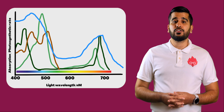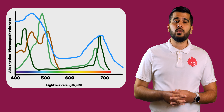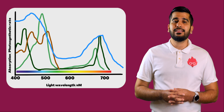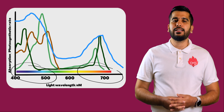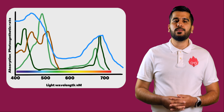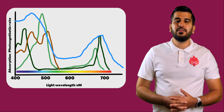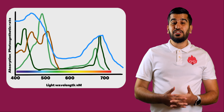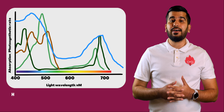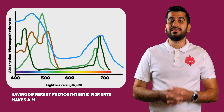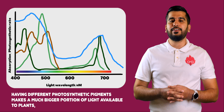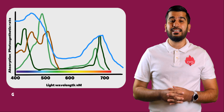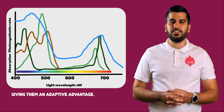When we compare the absorption and action spectrum graphs for chlorophyll pigments, they match, and we can see that in green plants, blue and red light are used as the energy source for photosynthesis. Furthermore, action spectrographs show us that having different photosynthetic pigments makes a much bigger portion of light available to plants, giving them an adaptive advantage.